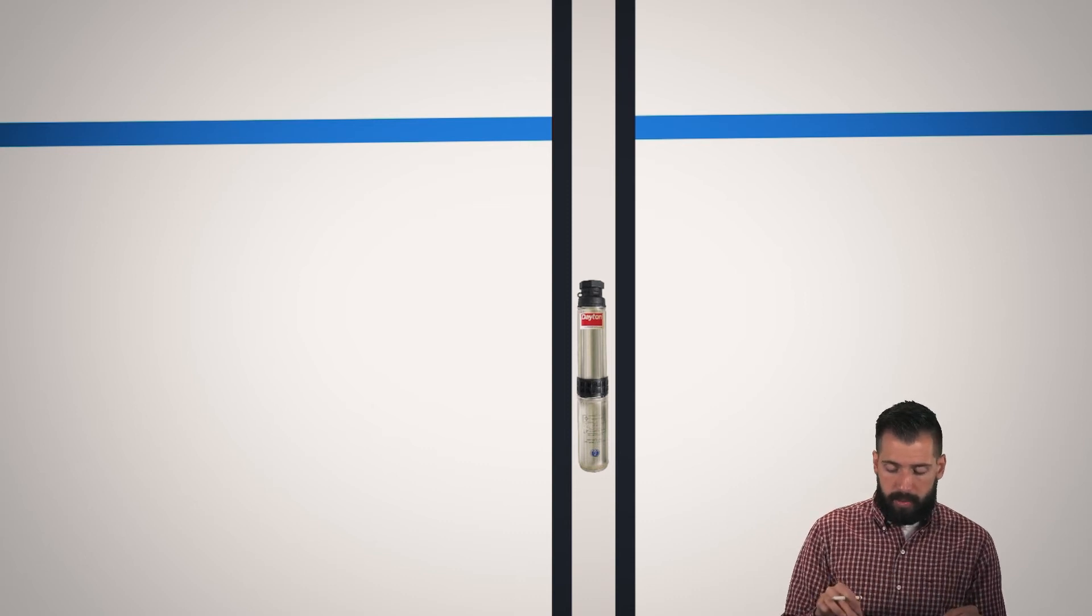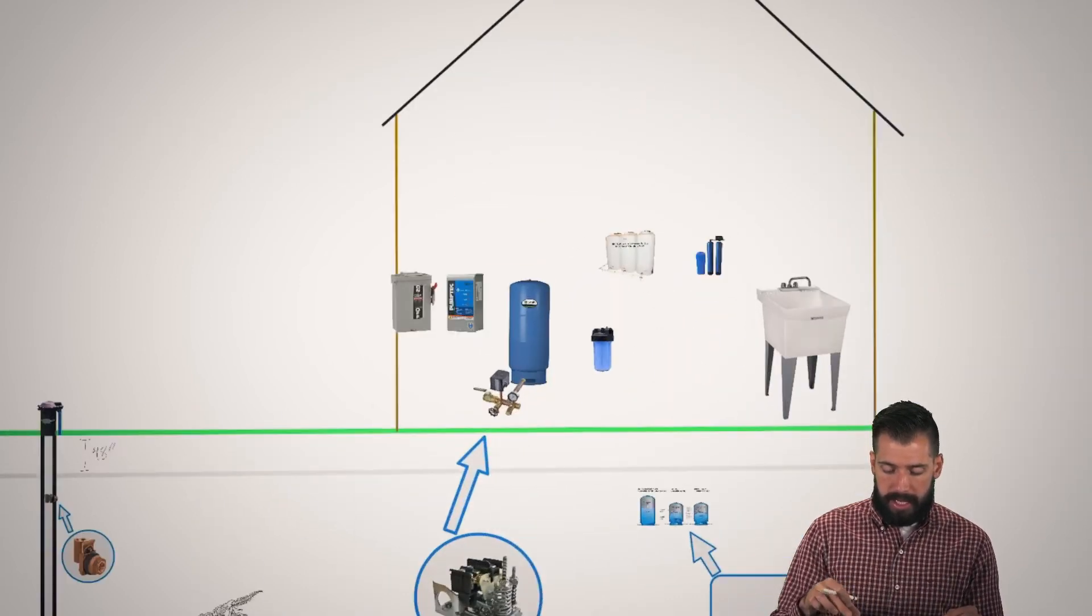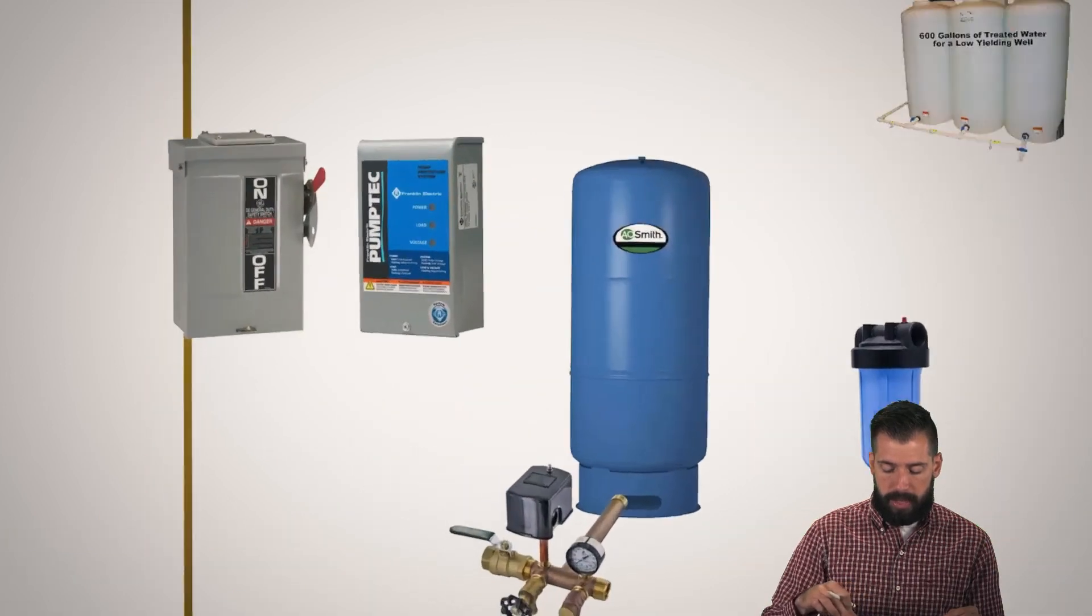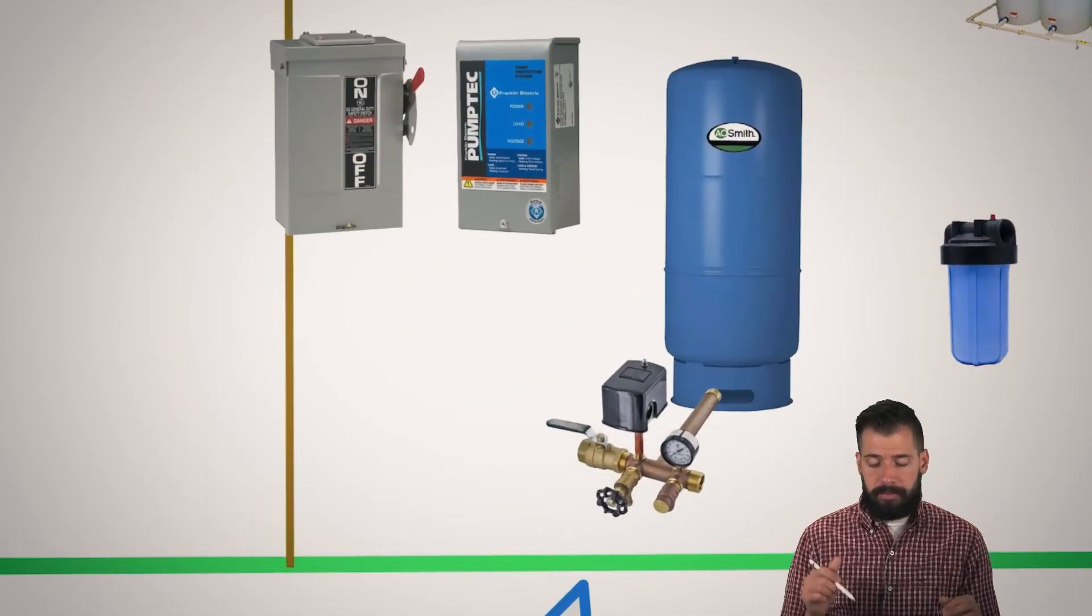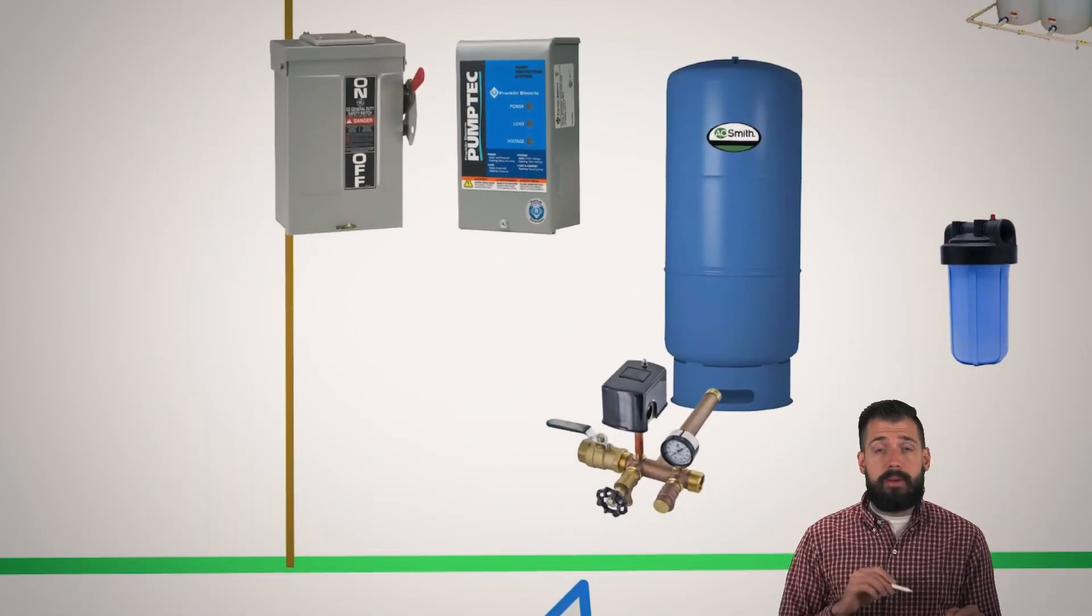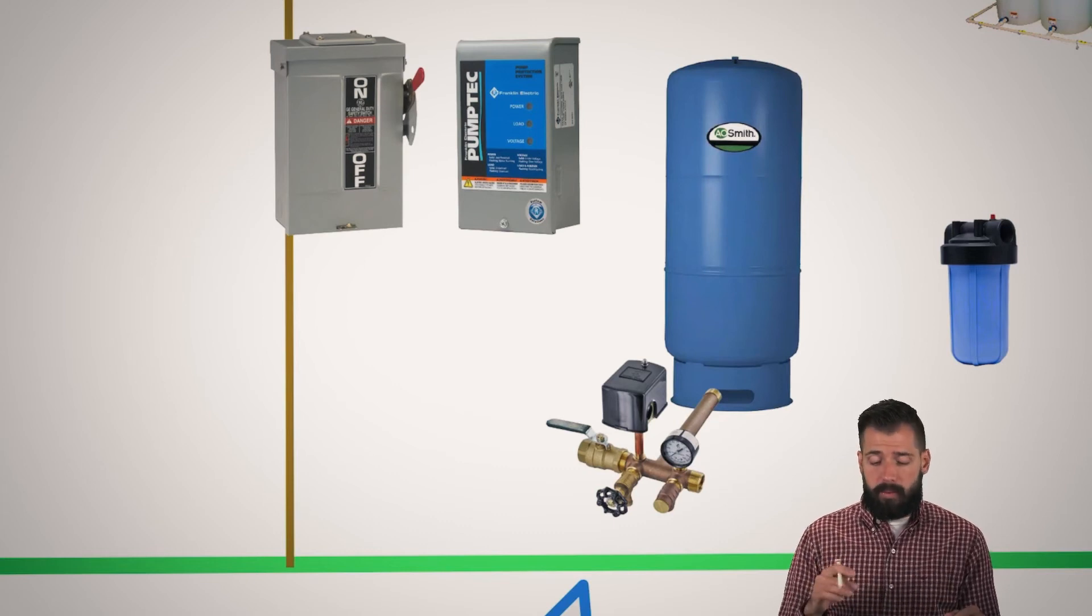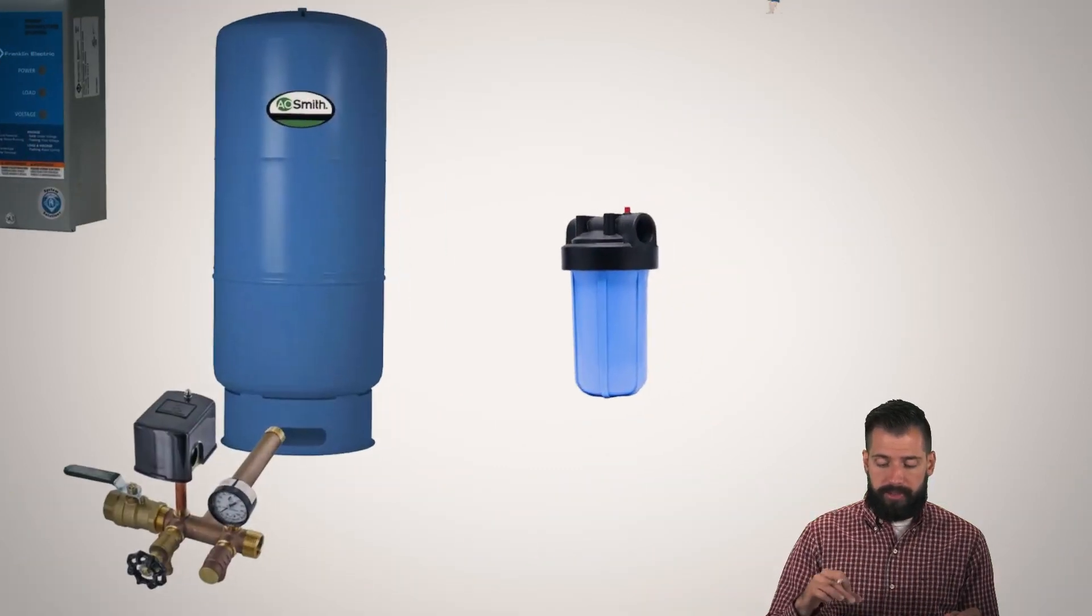So then we're going to take a look at the house. In the house, we have a few things that we're going to go over in much more detail. First, when the water comes in, we have our pressure gauge, we have our switch, and then we want it to go over to a filter.